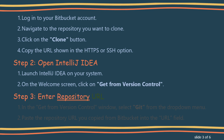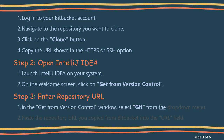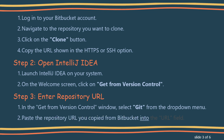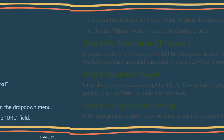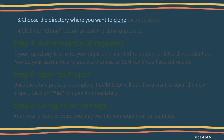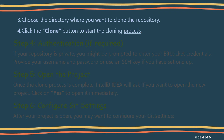Step 3: Enter Repository URL. In the Get from Version Control window, select Git from the drop-down menu. Paste the repository URL you copied from Bitbucket into the URL field. Choose the directory where you want to clone the repository, then click the Clone button to start the cloning process.